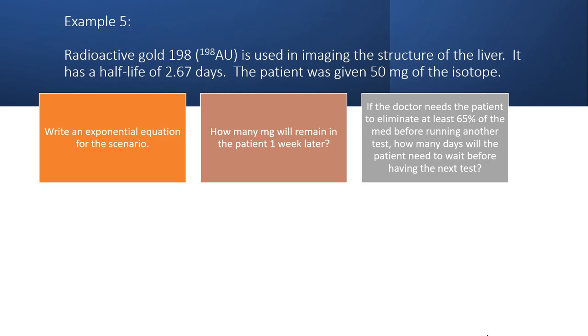In this problem, we are told that radioactive gold 198, which is abbreviated 198 AU, is used in imaging the structure of the liver.